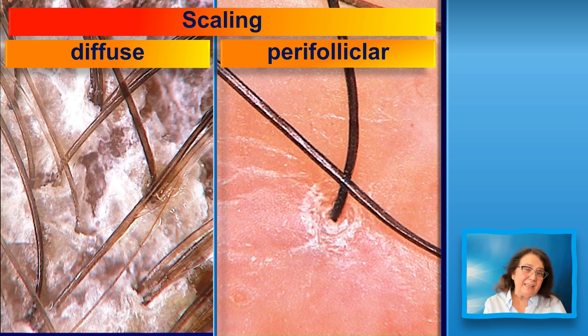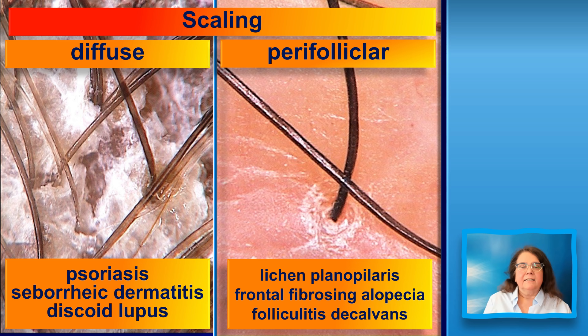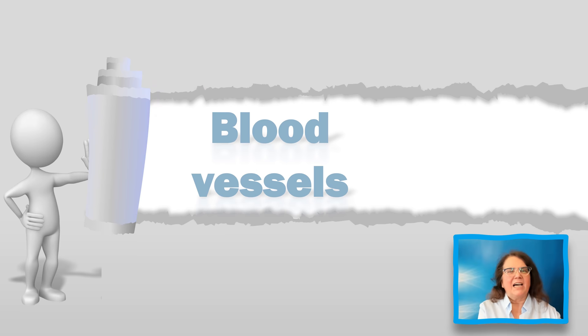Another feature we look at is the scaling or skin surface. We can distinguish two types. First, diffuse scaling — found in psoriasis, seborrheic dermatitis, discoid lupus erythematosus, contact dermatitis, and many other disorders. Second, perifollicular scaling — seen very commonly in lichen planopilaris and frontal fibrosing alopecia, and also in some other diseases. These two different types of scaling may provide information about the subtype of disease.